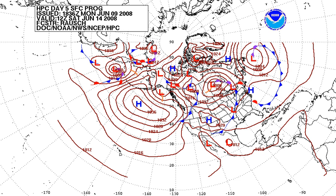Pressure measures force per unit area, with SI units of pascals: 1 pascal equals 1 newton per square meter. On average, a column of air with a cross-sectional area of 1 square centimeter, measured from mean sea level to the top of Earth's atmosphere, has a mass of about 1.03 kg and exerts a force of about 10.1 newtons or 2.37 lbf, resulting in a pressure at sea level of about 10.1 N/cm² or 101 kN/m². A column with a cross-sectional area of 1 in² would have a mass of about 6.65 kg and a weight of about 65.4 N or 14.7 lbf, resulting in a pressure of 14.7 lbf/in².